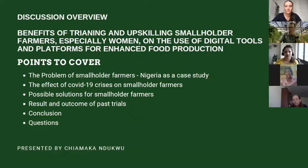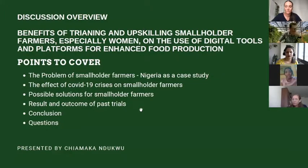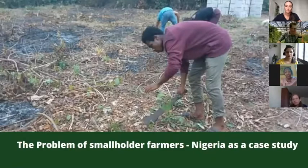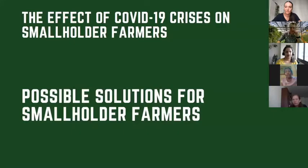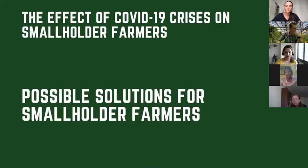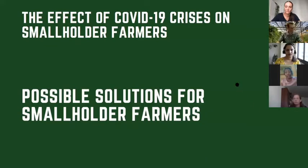At AgriHive, we discovered that 80% of farmers who were not able to use digital tools for data entry were actually affected — they couldn't even raise money for their next planting season. They couldn't get financial assistance because they didn't have data and records to access the small grants available in the country. We believe that with training on the use of digital tools, farmers can make good investment decisions, get funding, and sell their products effectively.